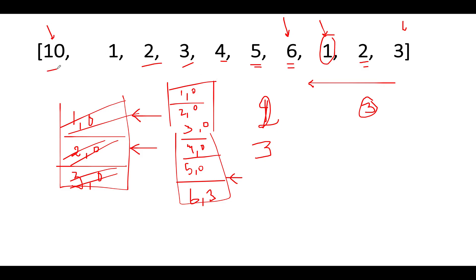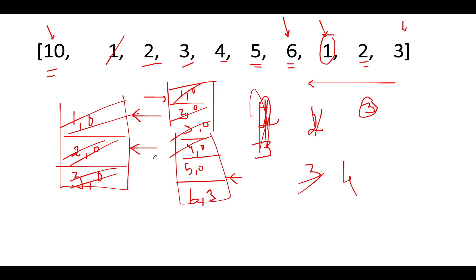Next we see 10 - 10 is greater than the peak element of the stack. So we have 1 here - it gets deleted, count gets updated to 1. Next the peak is 2 - 2 is lower than 10, gets deleted, count gets updated to 2. Then 3 gets deleted, count is 3. Then 4 gets deleted, count is 4. Then 5 gets deleted, count is 5. Then 6 gets deleted, count is 6. We have iterated over the entire array - the count is 6.